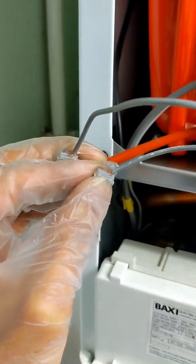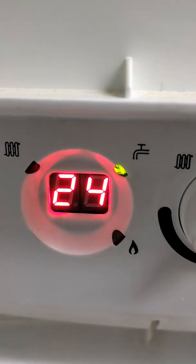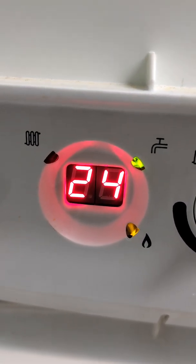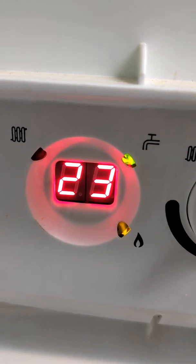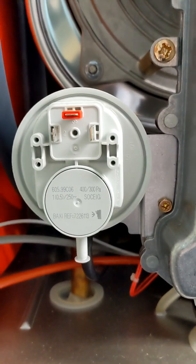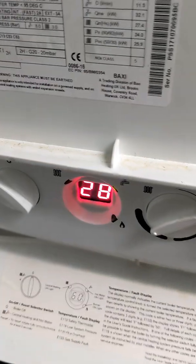As soon as I've bridged that up, the boiler has gone straight into command mode. It's recognized that continuity there. But as soon as I break that, we get E28 again.